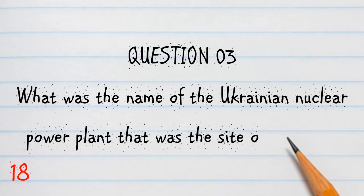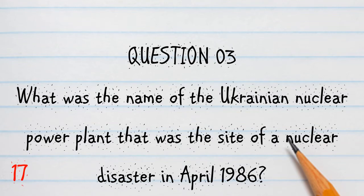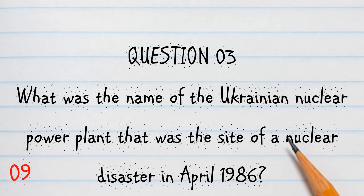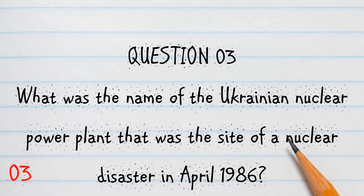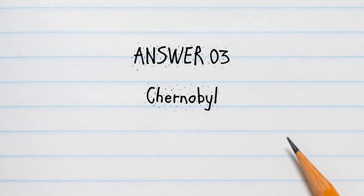Question 3. What was the name of the Ukrainian nuclear power plant that was the site of a nuclear disaster in April 1986? Answer 3: Chernobyl.